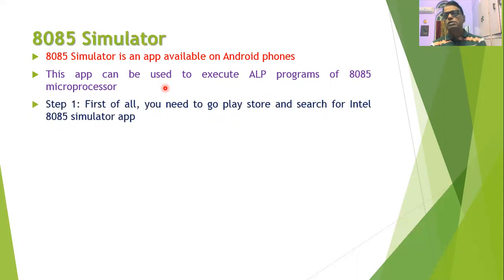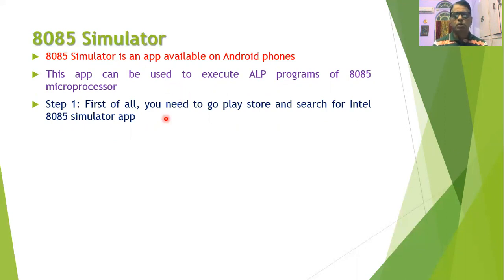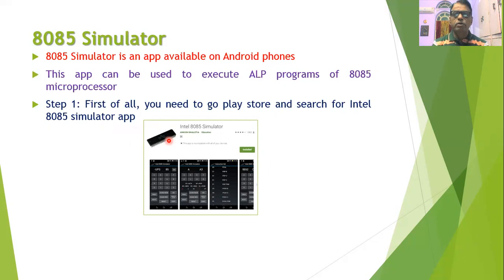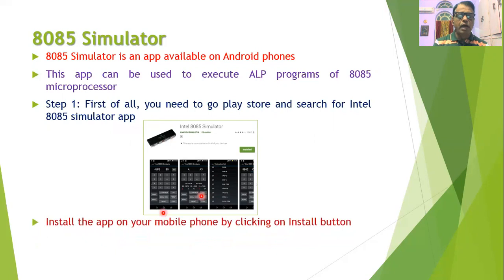Now we will go through the steps to achieve this. In the first step, we need to go to the Play Store and search for the Intel 8085 simulator app. When you search for it, the related apps will be displayed on your screen. Select the appropriate one and install it on your mobile phone by clicking the install button.